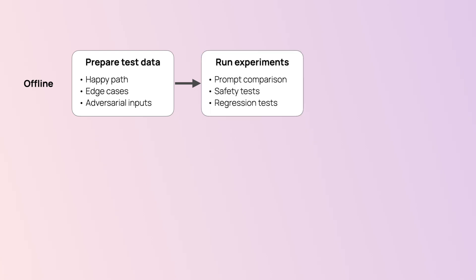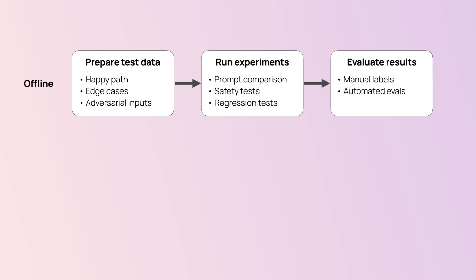Then you can iterate. You can test different models, prompts, and configurations. You can start with manual evaluations and then scale with automated metrics. And this is an ongoing cycle — you make changes, you run tests, and you refine step by step.